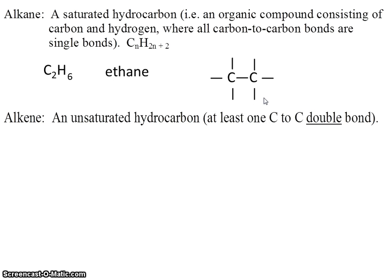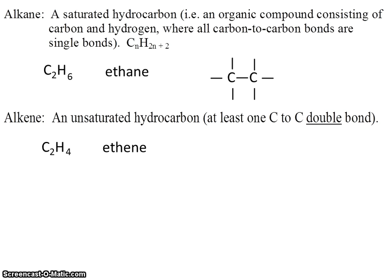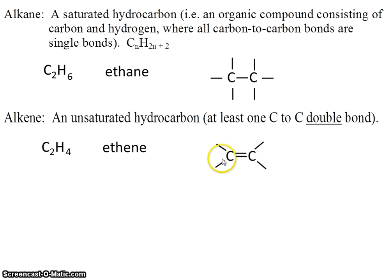An alkene is similar, except that it has double bonds. For example, C2H4 — it has two less hydrogens because there's a double bond, leaving less space for hydrogens. This molecule is called ethene.